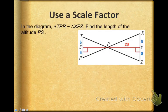Okay, so I would like you to, in this diagram, I have given you that triangle TPR is similar to triangle XPZ. And I want you to find the length of the altitude of triangle TPR, which is line segment PS. That is the altitude, and I want you to find that.